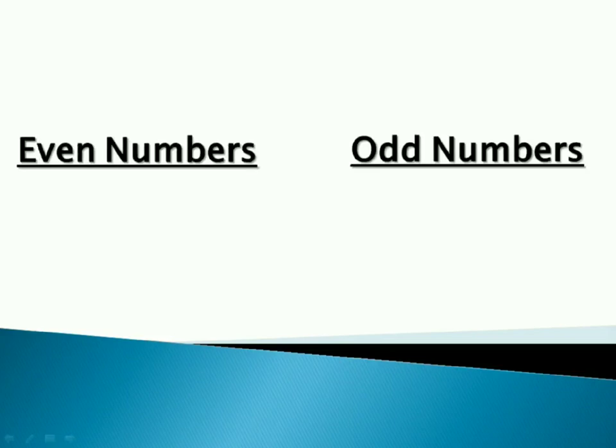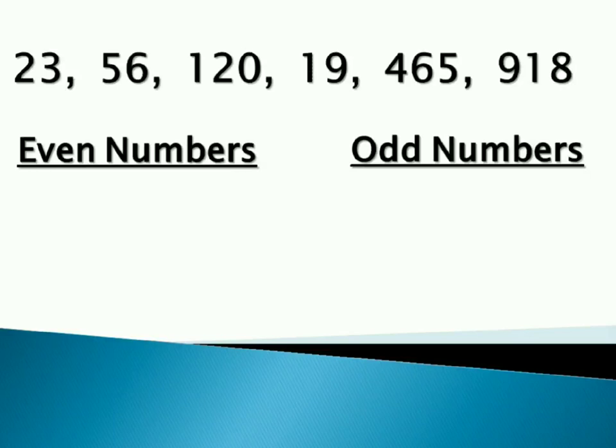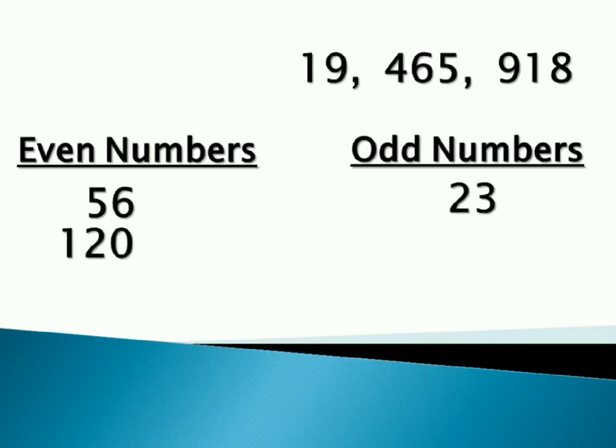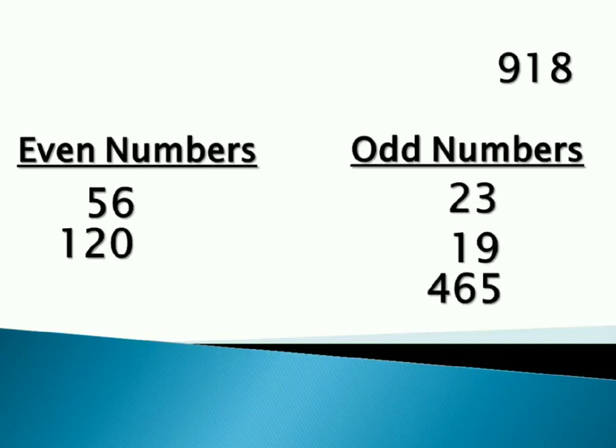Let's do one exercise. We have some numbers. Let's put them in odd or even numbers. First one is 23. It has 3 at units place, so it's an odd number. 56 has 6 at units place, so it's an even number. 120 has 0 at units place, so it's an even number. 19 has 9 at units place, so it's an odd number. 465 has 5 at units place, so it's an odd number. 918 has 8 at units place, so it's an even number. Great.